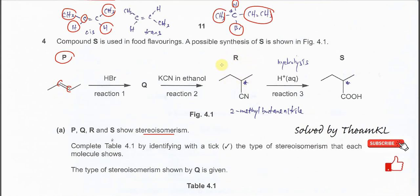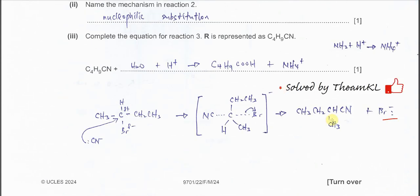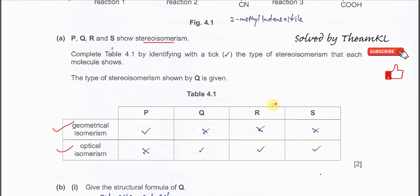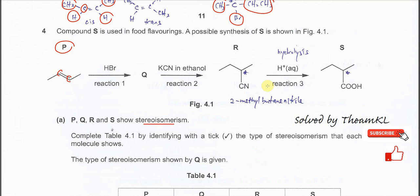This is compound R. From its structure, you can see that the central carbon is a chiral carbon because it has four different groups attached to it. Therefore, compound R also shows stereo isomerism — specifically, optical isomerism.